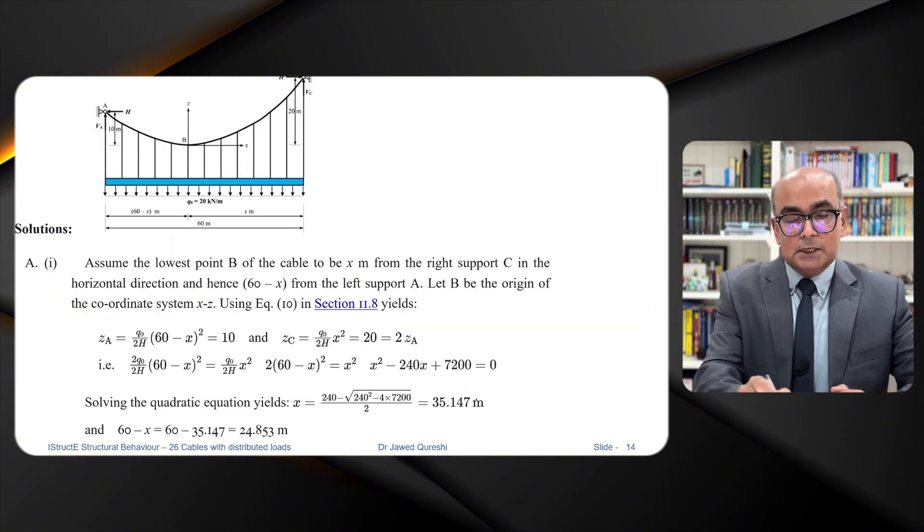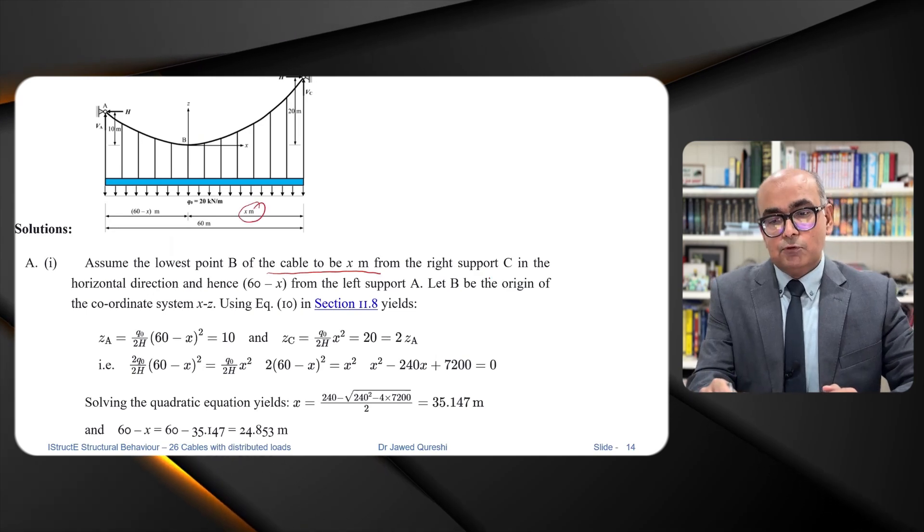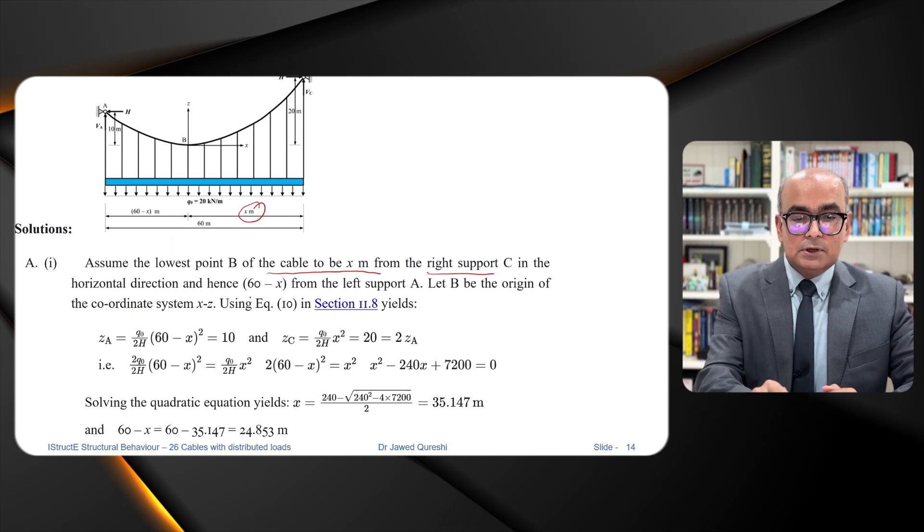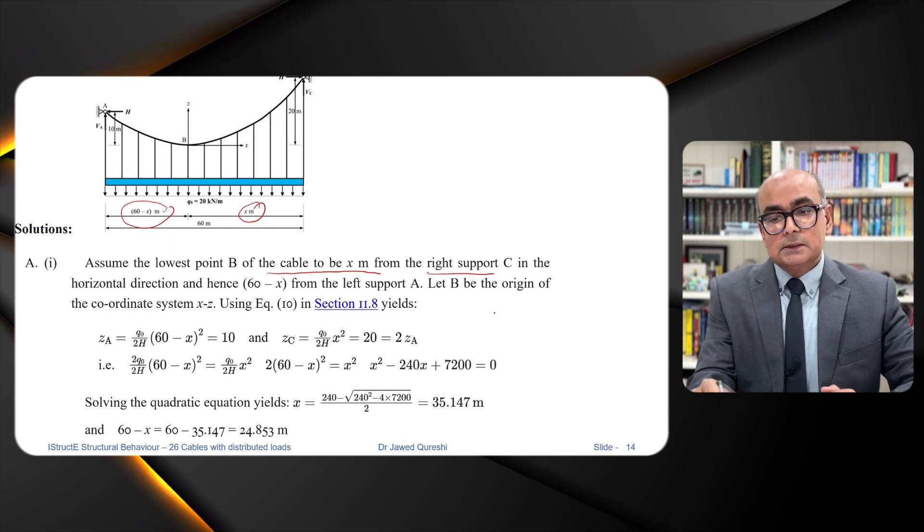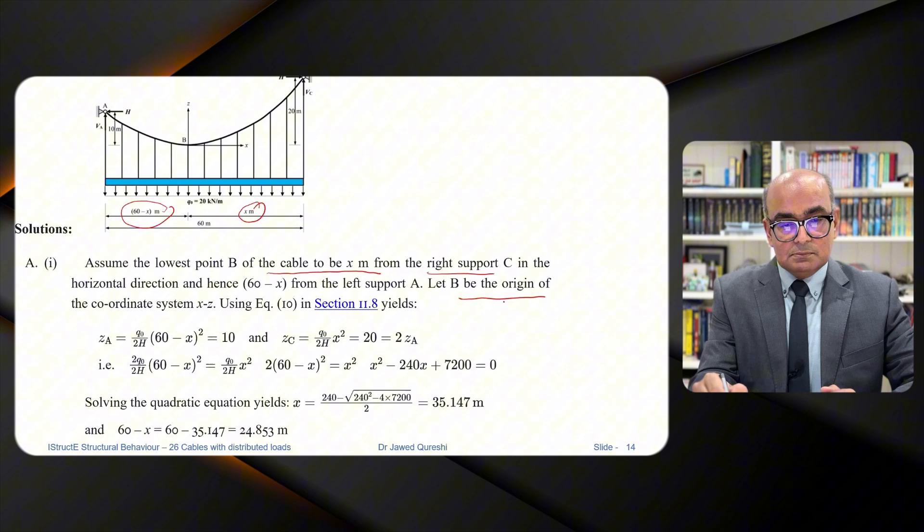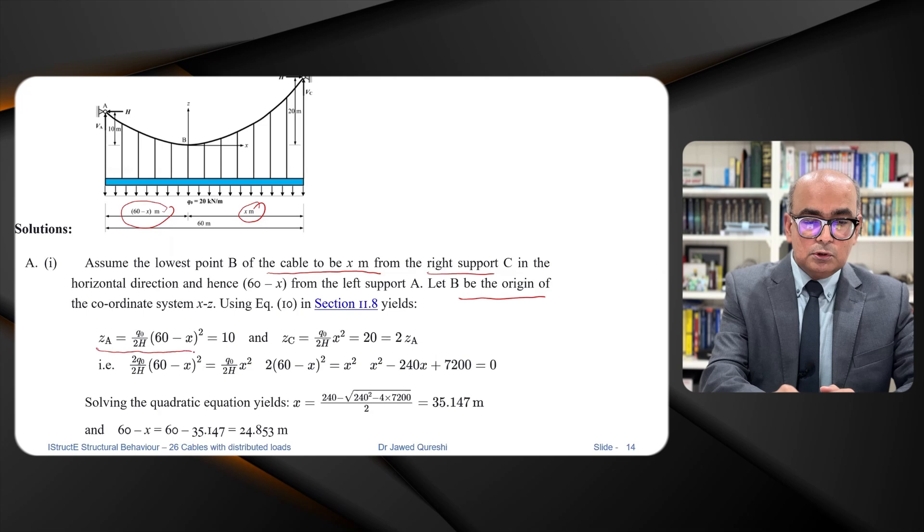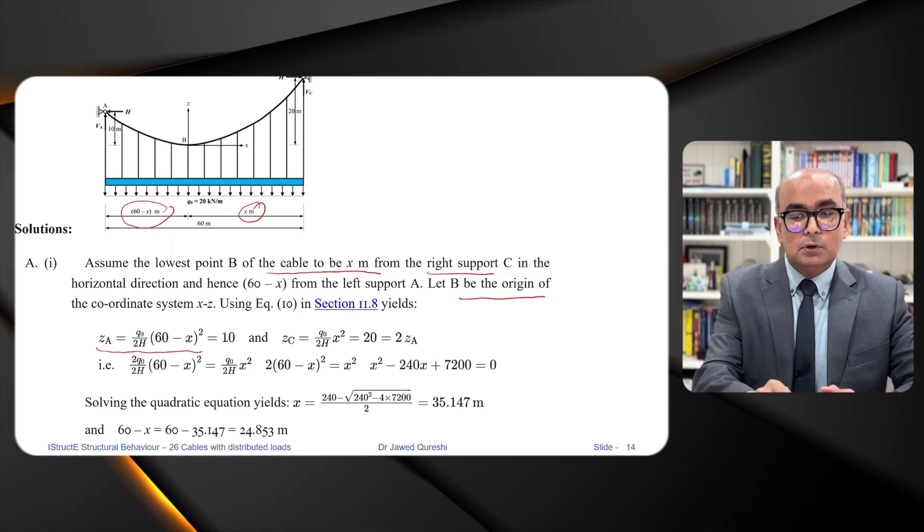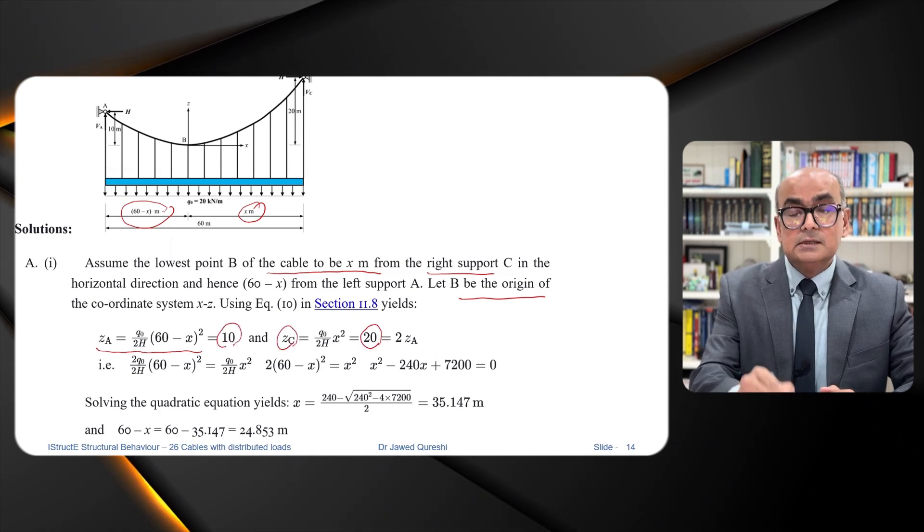Now let us assume that point B of the cable is X distance away from the right support C and the horizontal direction this other side is 60 minus X. Let B be the origin of the coordinate system XZ. We're using this formula directly ZA is equal Q naught over 2H times 60 minus X square. ZA is 10. ZC is 20.